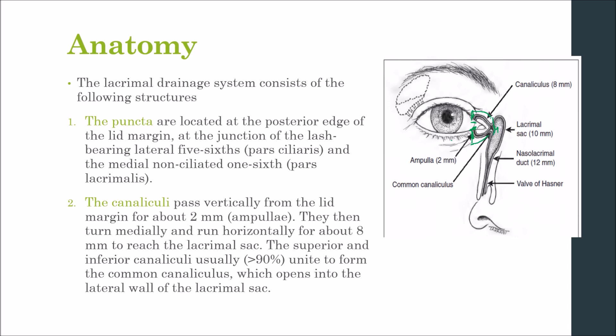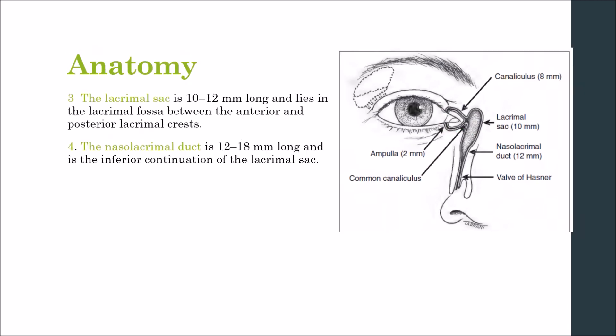The valve of Rosenmuller prevents reflux of tears into the canaliculi. Treatment of canalicular obstruction may be complex. The lacrimal sac is about eight to ten millimeters long and lies in the lacrimal fossa between the anterior and posterior lacrimal crests.